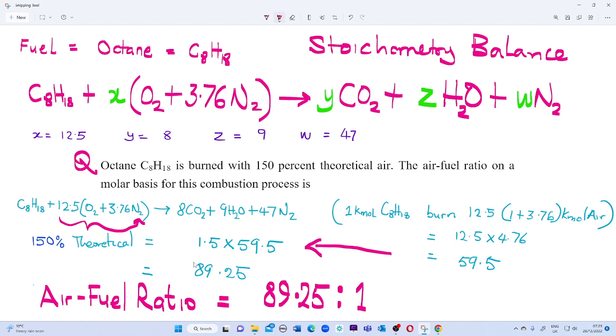Octane C₈H₁₈ is burned with 150% theoretical air. The air-fuel ratio on a molar basis for this combustion process is what? Once again, octane gas C₈H₁₈ is burned with 150% theoretical air.